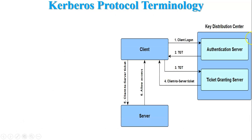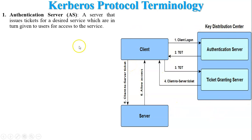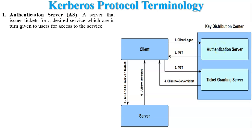Kerberos protocol terminology. This is one architecture of the Kerberos server. Authentication Server: a server that issues tickets for a desired service, which are in turn given to users for access to the services. This is the authentication server within the Key Distribution Center. First, the client communicates with the authentication server and provides their identity. The authentication server then generates one ticket and provides it to the client.